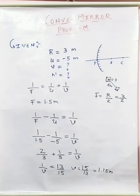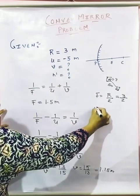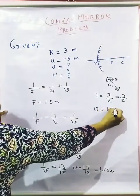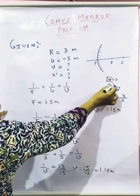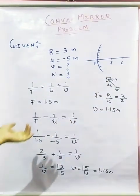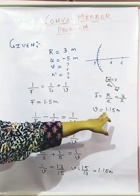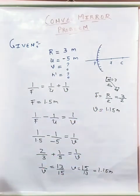It means your image is formed at 1.15 meter. V they have got that is 1.15 meter. This image is going to make behind the mirror at 1.15 meter.